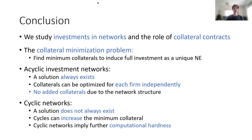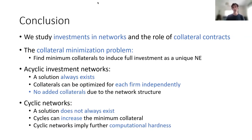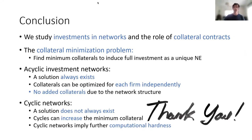In conclusion, we study investments in networks and the role of collateral contracts in affecting investment games. We define the collateral minimization problem to find minimum collaterals inducing full investment as a unique Nash equilibrium. In acyclic networks, a solution always exists, collaterals can be optimized per firm independently, and network structure adds no excess collateral requirement. In cyclic networks, a solution does not always exist, cycles can increase the minimum total collateral required, and cycles imply further computational hardness.